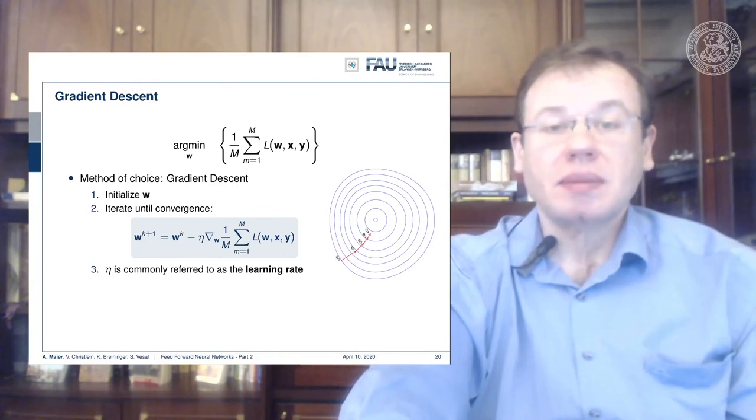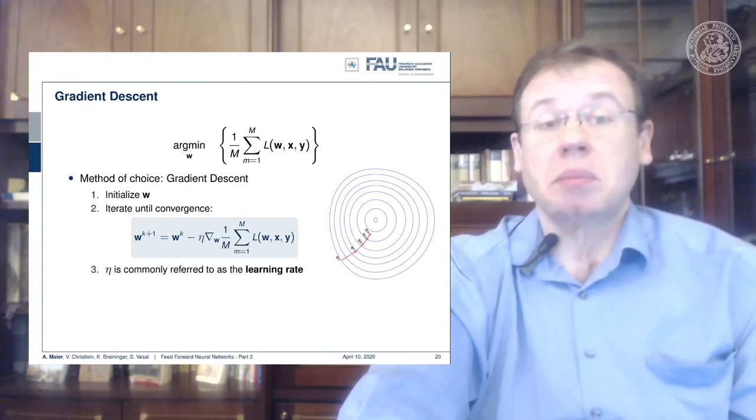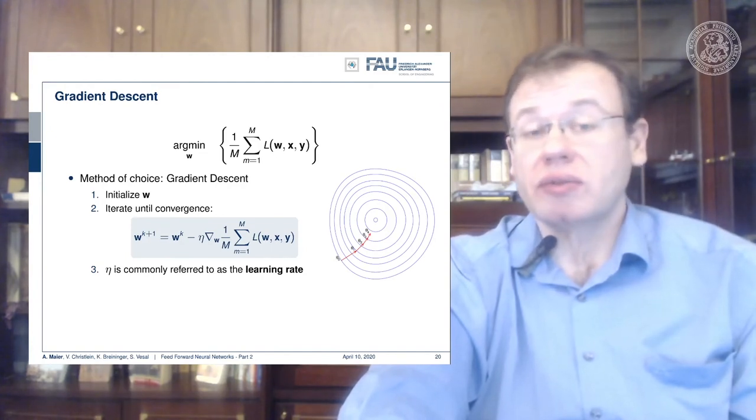Then you follow this direction until you achieve a minimum. Eta is commonly referred to as the learning rate. The interesting thing is it's very simple and you will find some minimum.